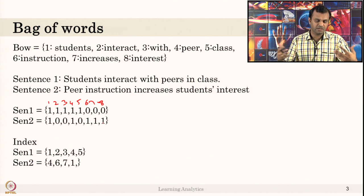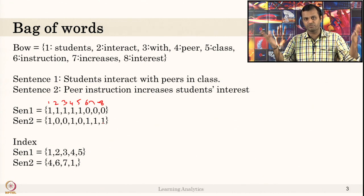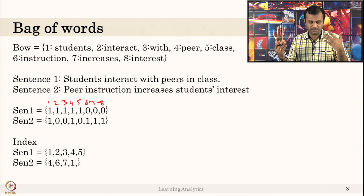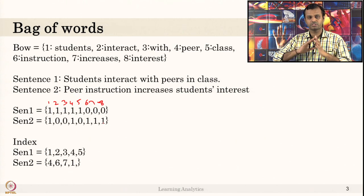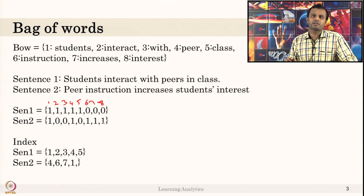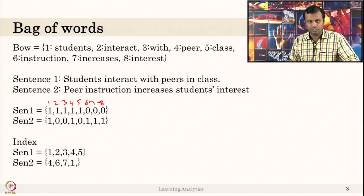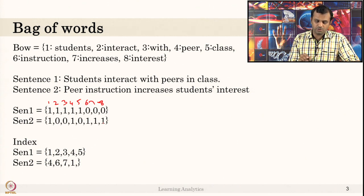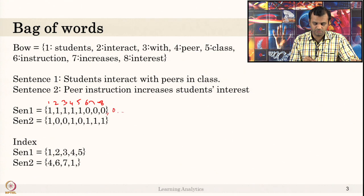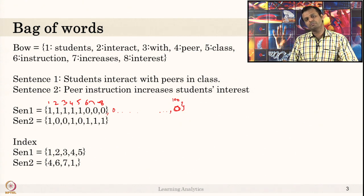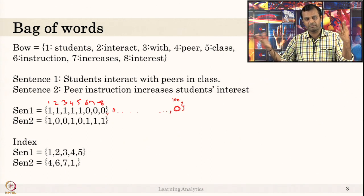Consider you have many students writing sentences — you might get a bag of words dictionary of thousands or even hundreds of thousands of words, because if you consider all forms of words, the dictionary grows very large. If the dictionary has one thousand words and a student writes a sentence with only six words, there will be a huge number of zeros in the vector. This is called a sparse vector.